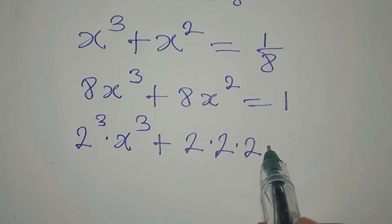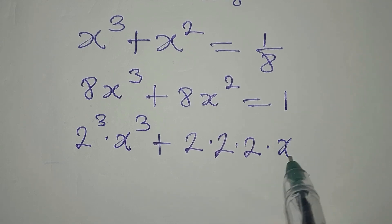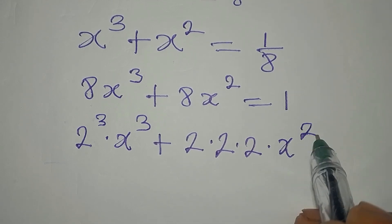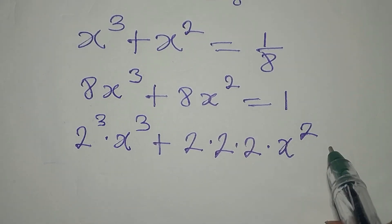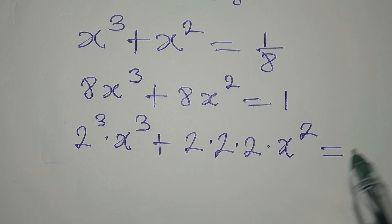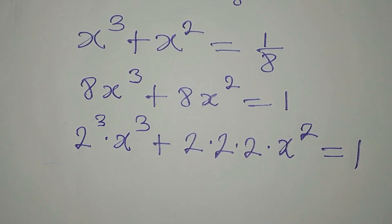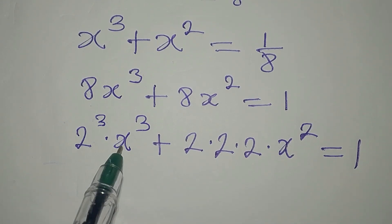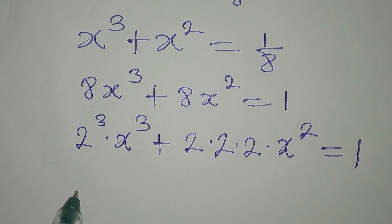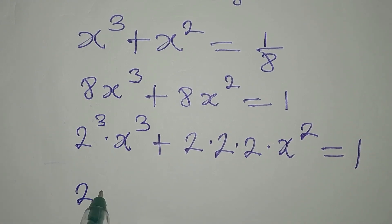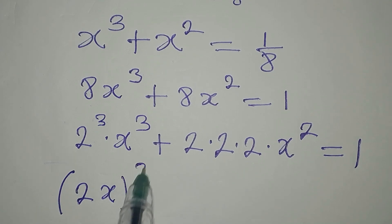Now, 8 is the same thing as 2 to the power of 3, multiplying x to the power of 3. Plus 8, which is 2 times 2 times 2, multiplied by x to the power of 2. All of this is equal to 1. I can combine these two and have 2x both of them to the power of 3.